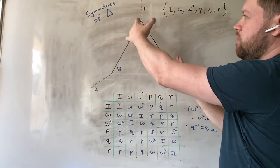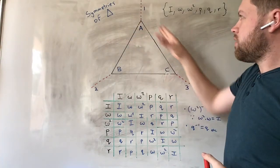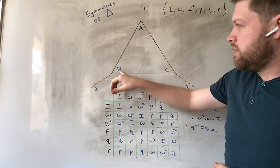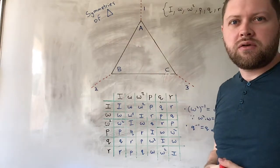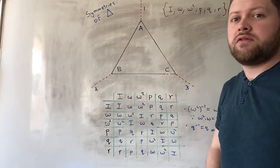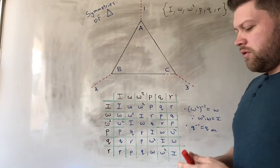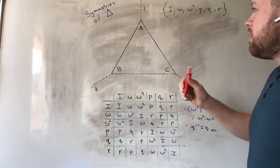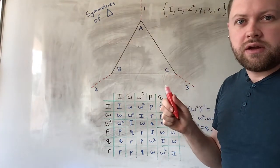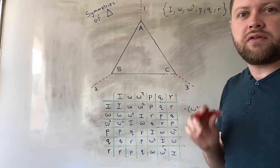If we just rotate the triangle 120 degrees, if we didn't have these labels here. These labels are just for our convenience. So we can rotate the triangle, and it still remains the same or looks the same.